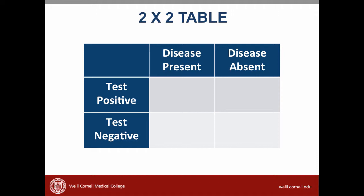To help us organize our thoughts, let's make something called a 2x2 table. The columns in our 2x2 table represent whether a disease is present or absent. The rows represent whether the test that we're studying was positive or negative. So how do we know whether our disease is present? We get that information from the gold standard test. In this case, we know whether the disease is present or absent from the patient's angiogram.